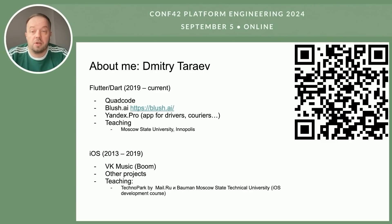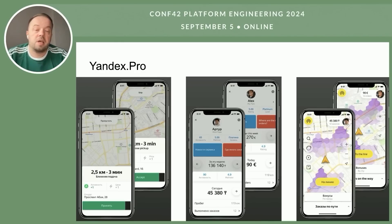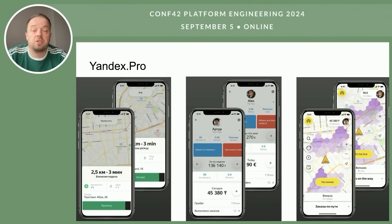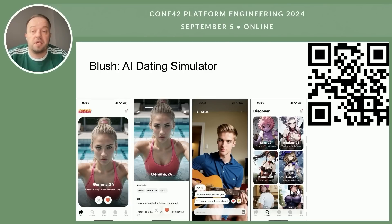I switched to Flutter in 2019, and my first big project was Yandex Pro — a driving app for Yandex Taxi used by drivers and couriers, similar to Uber and Uber Eats. The team was really huge, and I was part of that big team. After that, I joined a startup called Blush, with the idea to make an AI dating simulator, which is what we did.